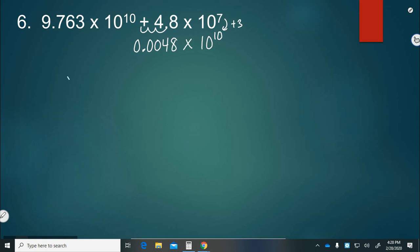Then we can add 9.763 plus 0.0048. For some reason, it doesn't want to write it. There we go. Adding those up, 0 and 8 is 8, 3 and 4 is 7, 6 and 0 is 6, 7 and 0 is 7. Bringing down the 9, we get 9.7678 times 10 to the 10th power.